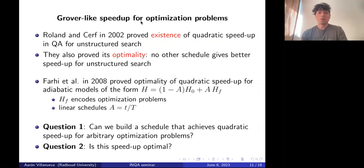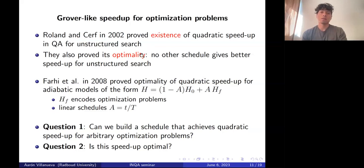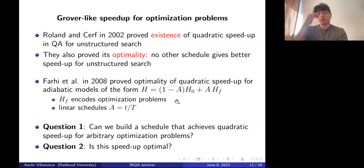In 2002, Roland and Cerf proved the existence of a quadratic speedup for quantum annealing in the case of unstructured search, and also proved the optimality of this quadratic speedup — meaning no other schedule gives a better speedup for unstructured search. Later, Farhi et al. in 2008 proved optimality of quadratic speedup for adiabatic models where H_F encodes arbitrary optimization problems and the schedule A is restricted to a linear dependency on time. This roadmap gives open questions that are our departing point: can we build a schedule achieving quadratic speedup for arbitrary optimization problems, and is this speedup optimal?